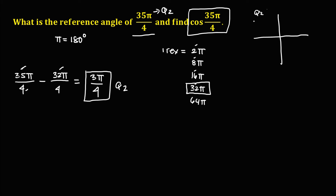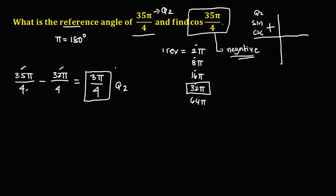In quadrant 2, only sine and cosecant are positive. Therefore, cosine of 35π over 4 is negative.